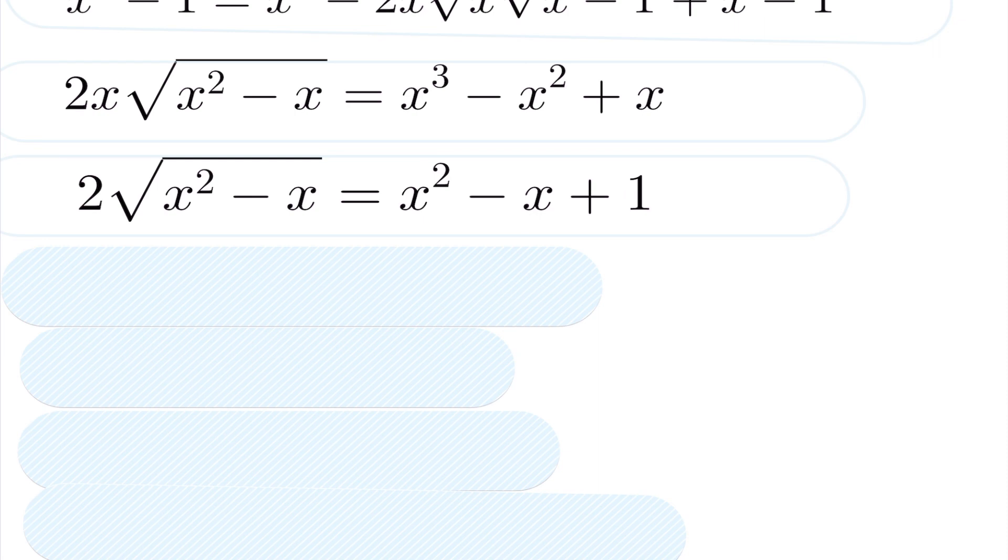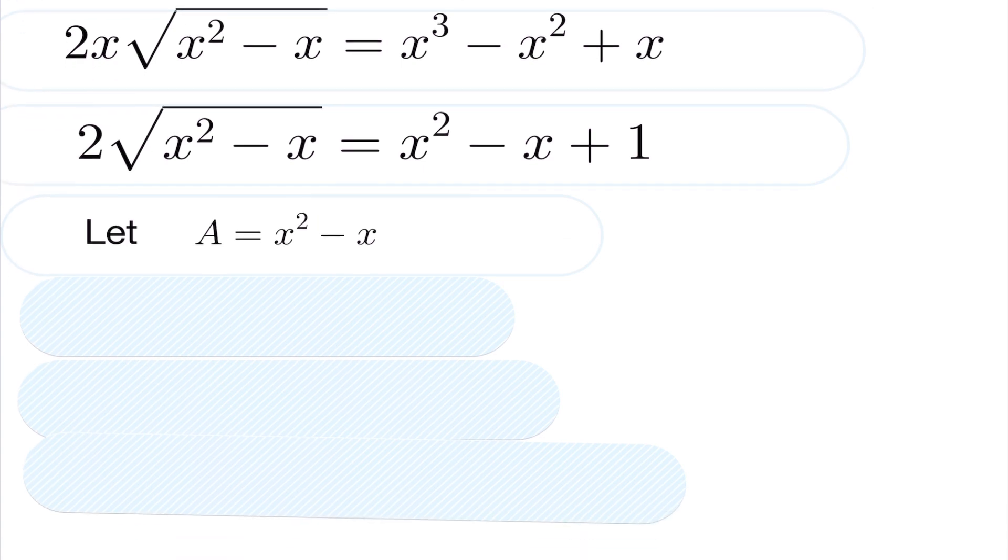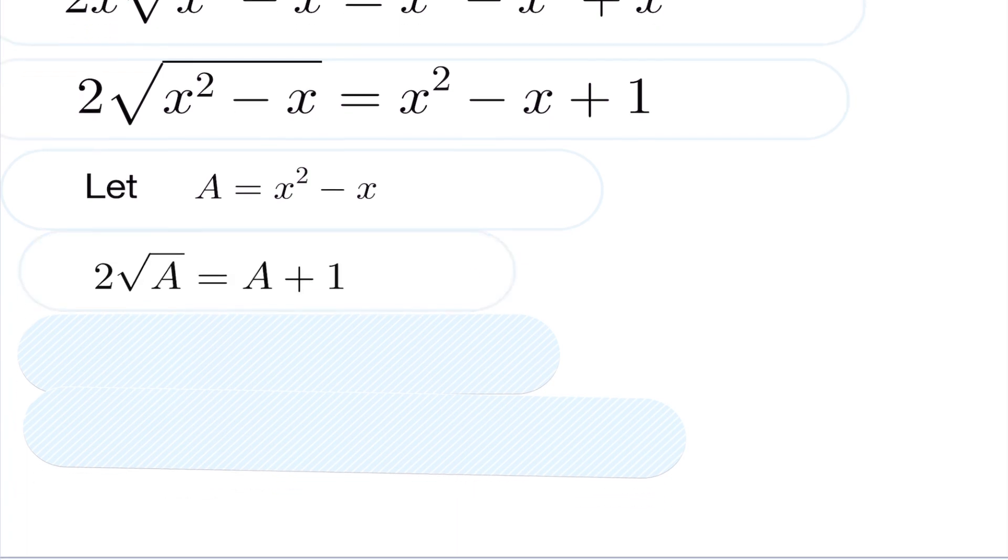And then continuing on, we're going to do a quick substitution. I'm going to let a equal x squared minus x, just to clean this up a bit and make the following observation. By doing so and doing that substitution, I now have 2 root a is equal to a plus 1.